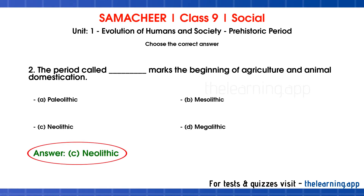The Prehistoric Period has three stages: Paleolithic, Mesolithic, and Neolithic. This period is called Neolithic. In this period, there is agriculture and animal domestication.